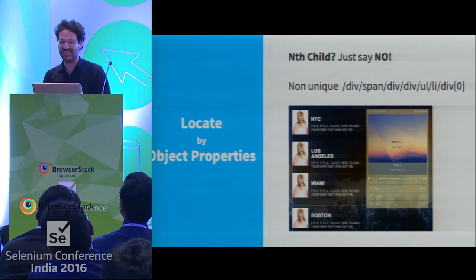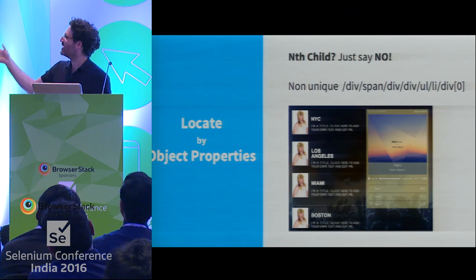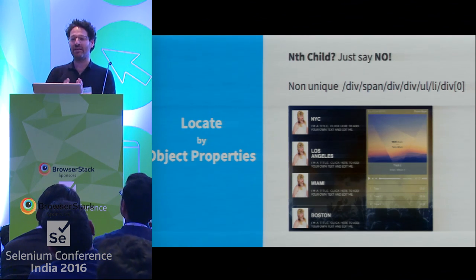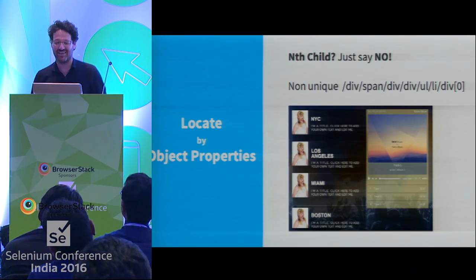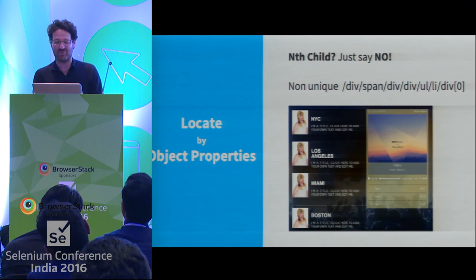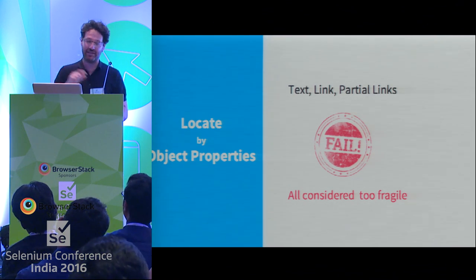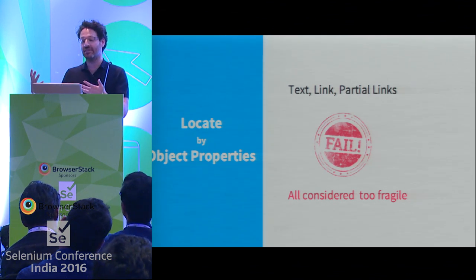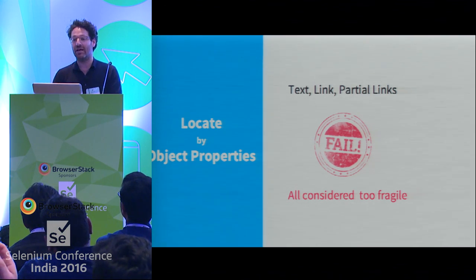I'm debug-oriented programming — you have to write code so you can debug it as fast as possible. A lot of people still use text, inner-text, or partial link text, and Selenium provides all of those. But the problem is the application keeps changing and they change a lot.